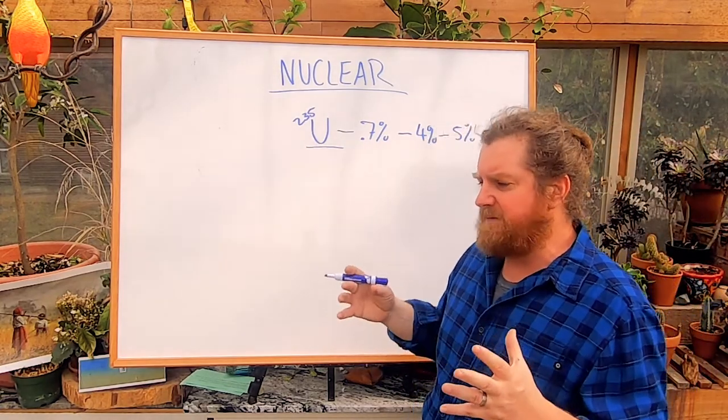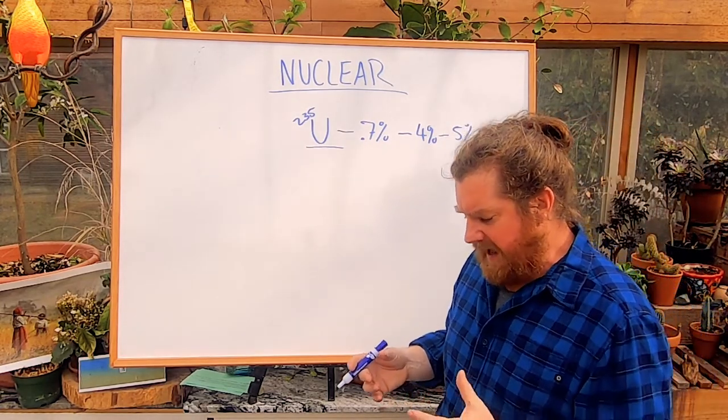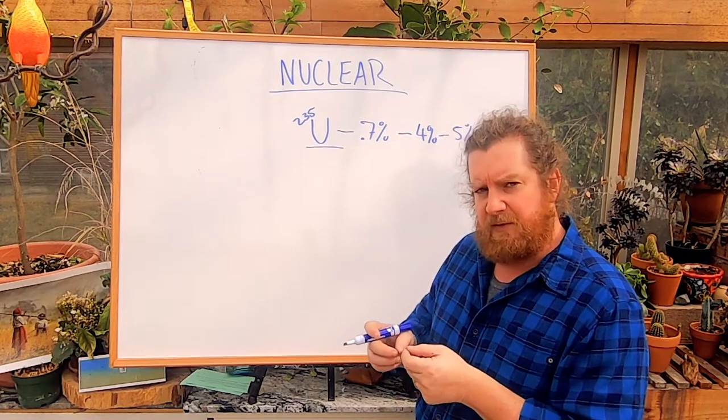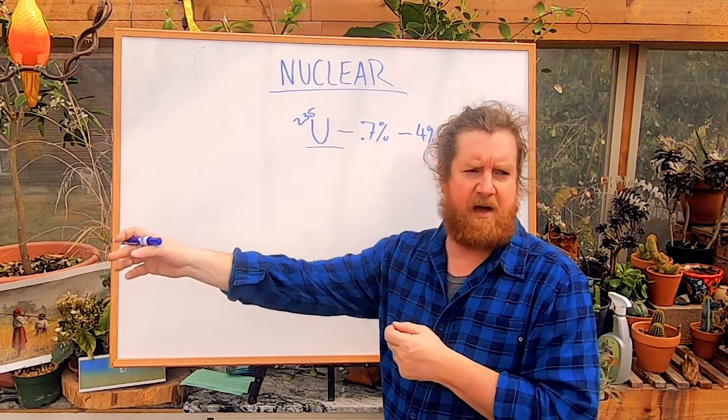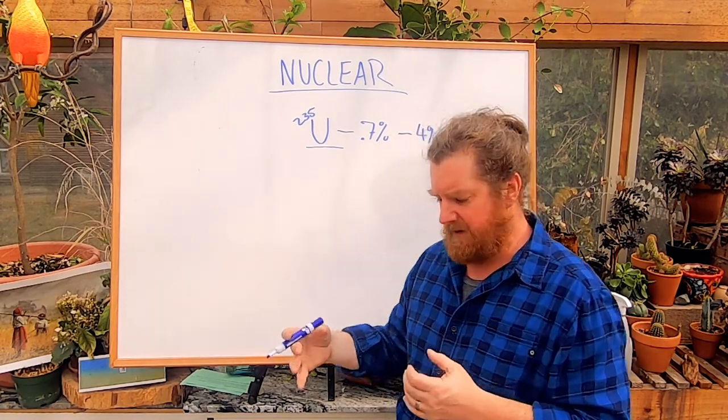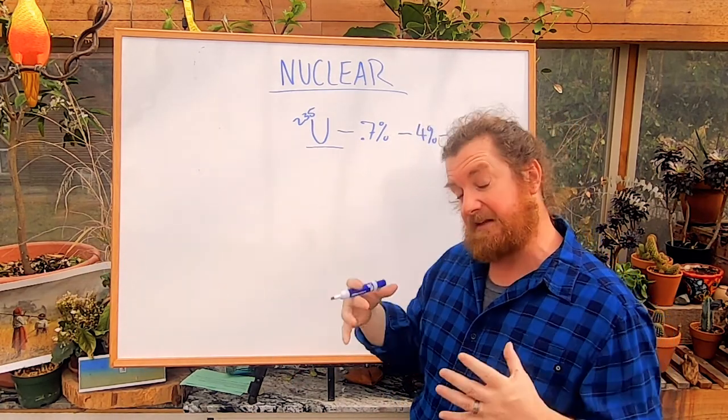We're kind of getting deep in the weeds here, but the last thing I wanted to add is that typically when those little decay reactions occur, the neutrons are moving too fast—they blast through any other atoms essentially unnoticed. So we need to figure out a way to slow them down.